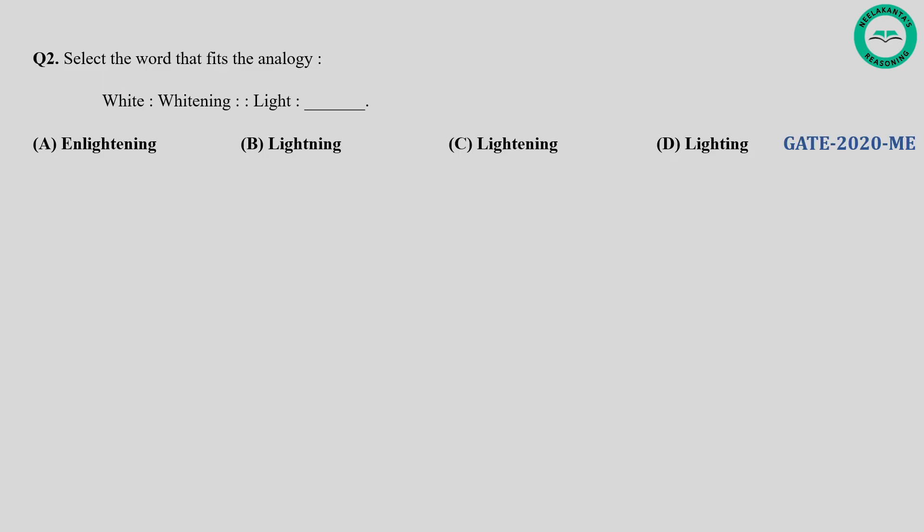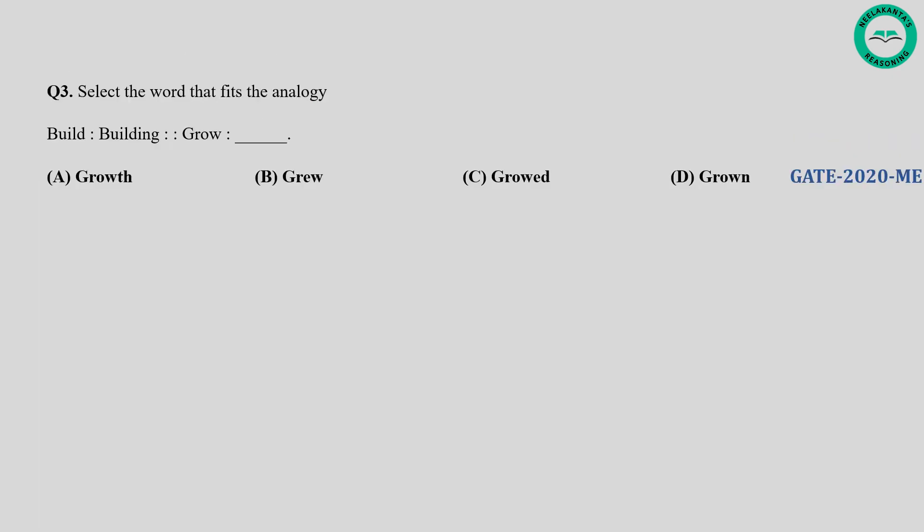Question number two: Select the word that fits the analogy — White, Whitening, Light, blank. The relationship is that whitening is the process of making something white. Similarly for light, the term that represents the process of making something light is lightening. So the answer is C.